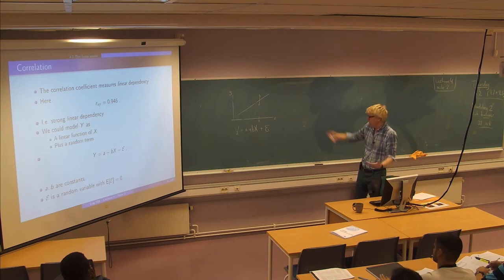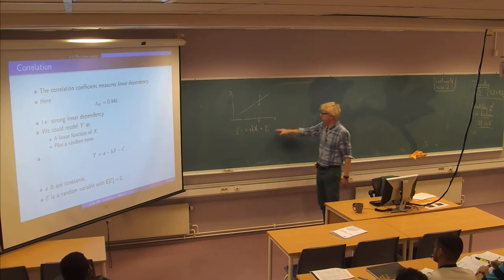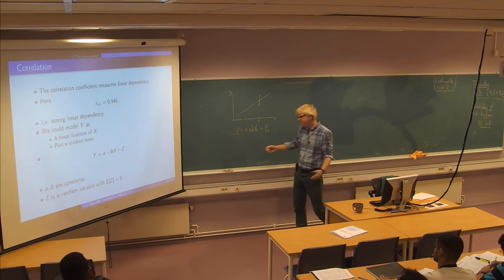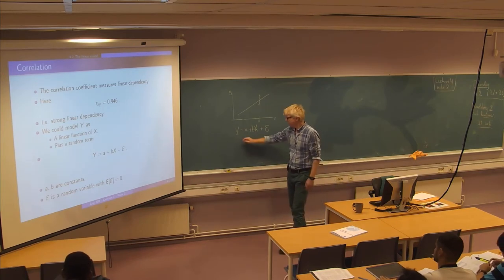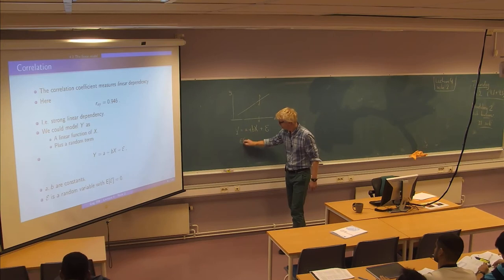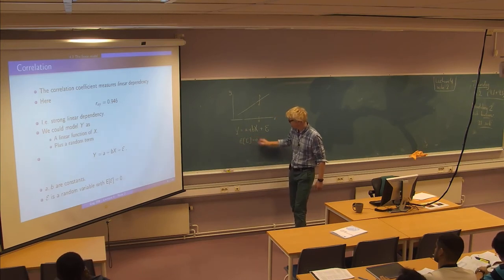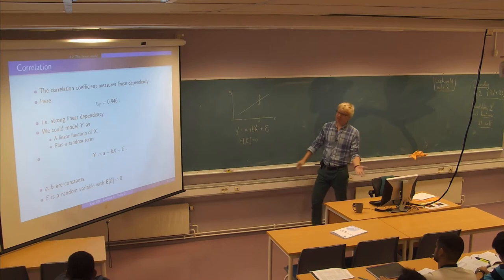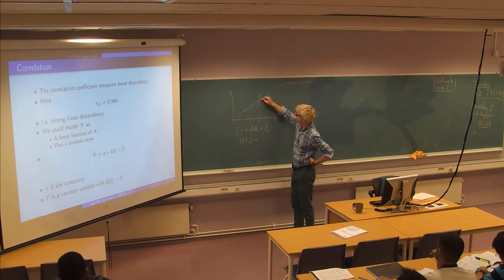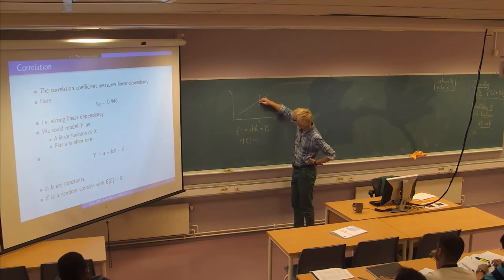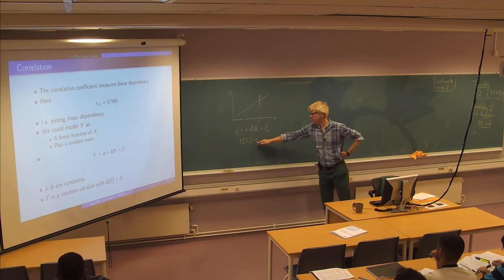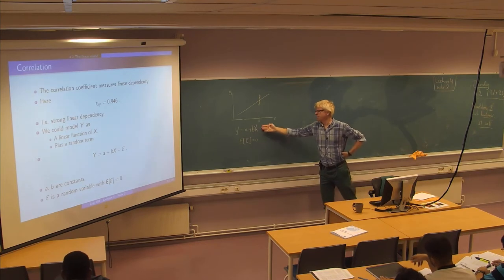So for now we just say that this guy here it's a random variable and we are saying that the expected value of this is zero which means on average the linear model is correct but for individual observations we go above and below sometimes. But on average it's going to be the linear function.